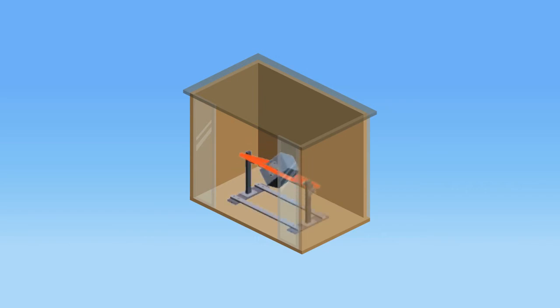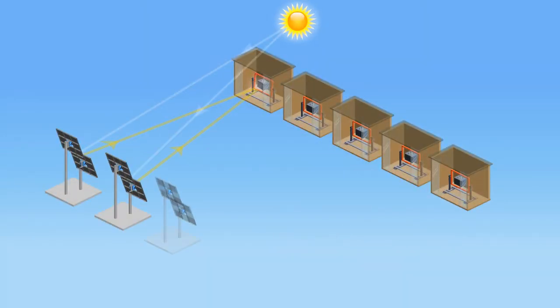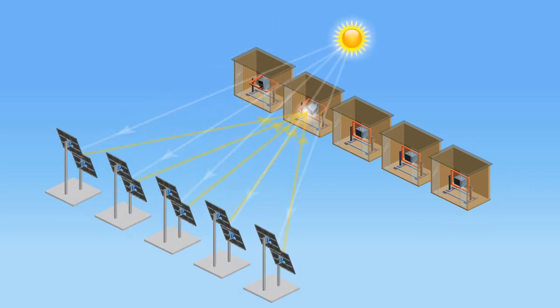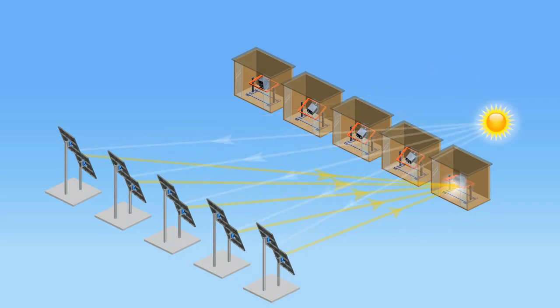Instead of moving molds in and out of the heat source as in traditional molding, solar rotational molding moves the heliostat beam from one inexpensive armature to another as needed. We replace costly machinery and fossil fuel energy with cheap, simple machinery and free solar thermal energy.